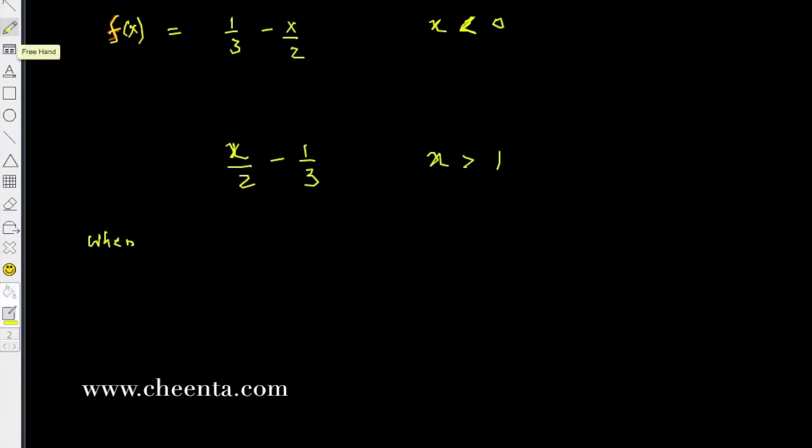So t is between 0 and x, and that means t minus x is simply x minus t. And when t is between x and 1, then we have t minus x.